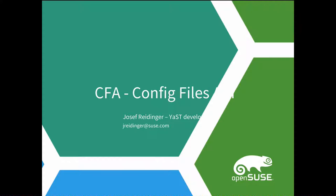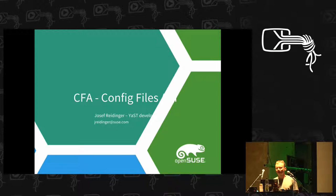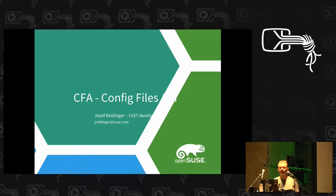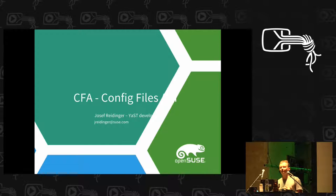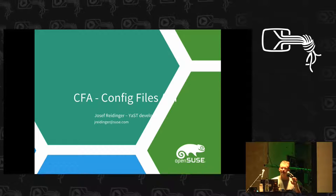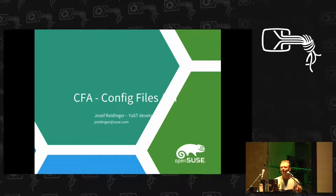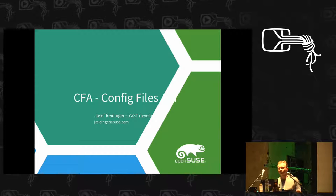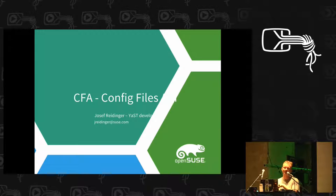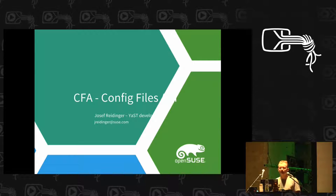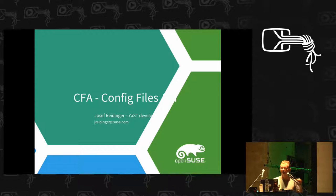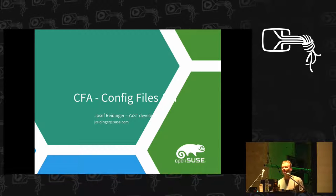Welcome to this presentation about CFA, which means Config Files API. It's an API mainly used for editing configuration files. By editing, I mean finding small changes in a file that do not break existing stuff. It's not something like Salt or CF Engine that owns the whole file and deploys a new version. It's an API for small changes, like you expect from YAST, that doesn't break your existing comments and such stuff.